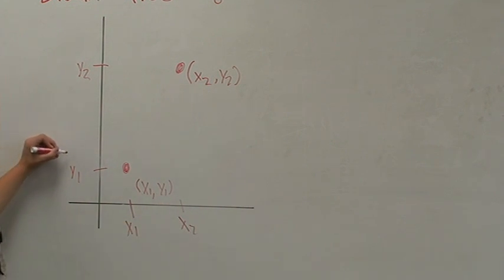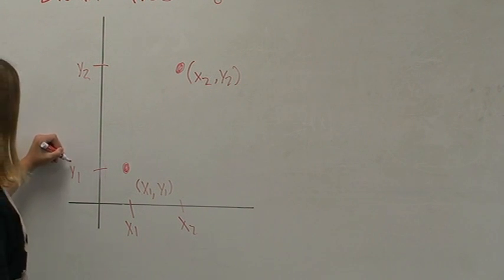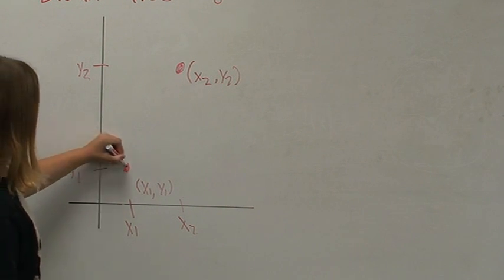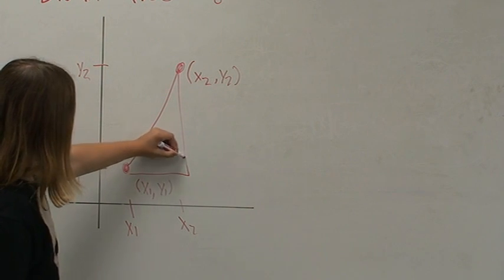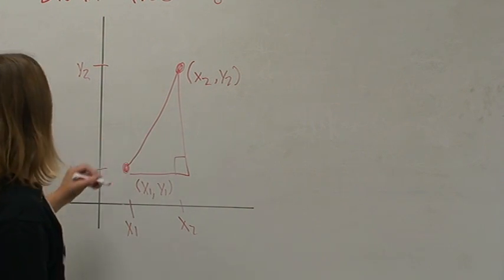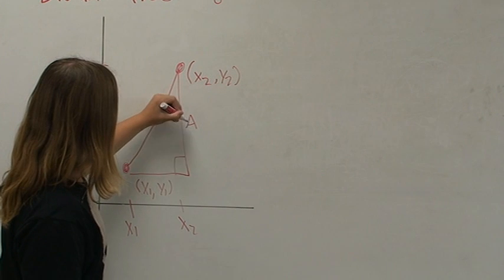We then want to find the distance equation using the Pythagorean theorem. To use the Pythagorean theorem, we need to create a right triangle with our two points. Let's label one of the legs A, one of the legs B, and the hypotenuse C.